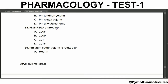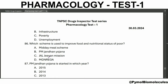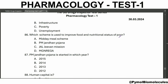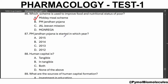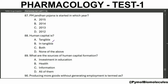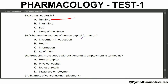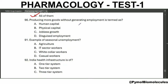An example of a self-employment program scheme in the Government of India is PM Rozgar Yojana. MGNREGA was started in 2005 and provides unskilled manual work for a minimum of 100 days per year. PM Gram Sadak Yojana is related to infrastructure. The scheme used to improve the food and nutritional status of the poor is the Midday Meal Scheme. PM Jan Dhan Yojana was started in 2014 for opening bank accounts. Human capital is intangible; physical capital is tangible. Sources of human capital formation include investment in education, health, and information.